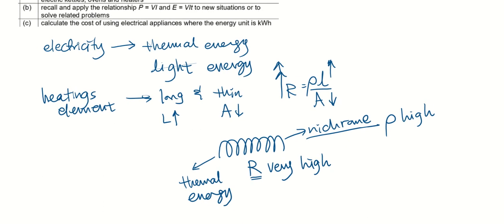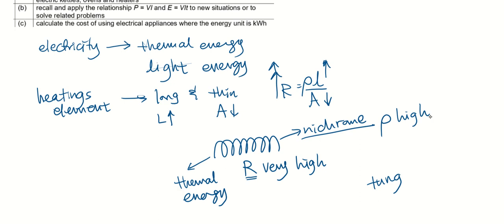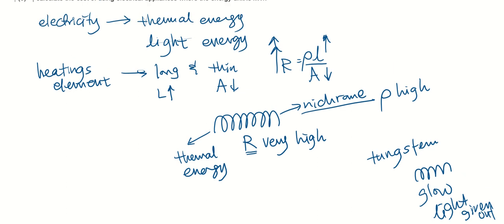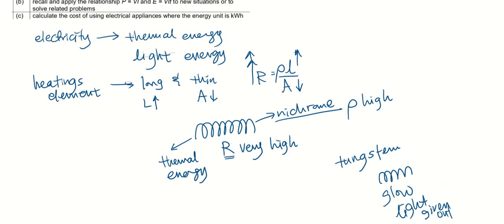Then for tungsten, it is used in filament lamps. The tungsten again is long and thin. We purposely coil it so we can accommodate a long length in this filament lamp. So the tungsten resistance will be very high. When electrons pass through it, it will become very hot and this will start to glow, so light will be given out. This is whereby we use electrical energy and convert it to other forms of energy.